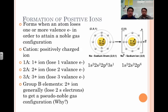2A elements will lose two electrons and will have a resultant charge of plus two. In chemistry, we write the number first and then the positive or negative charge.